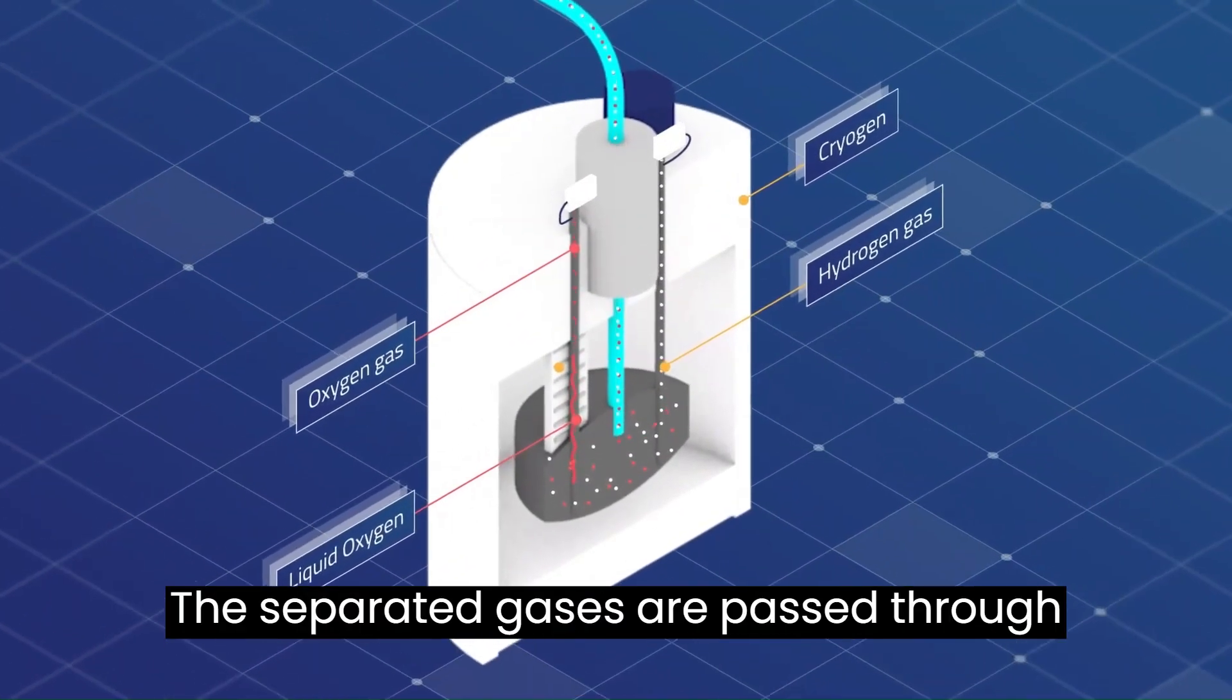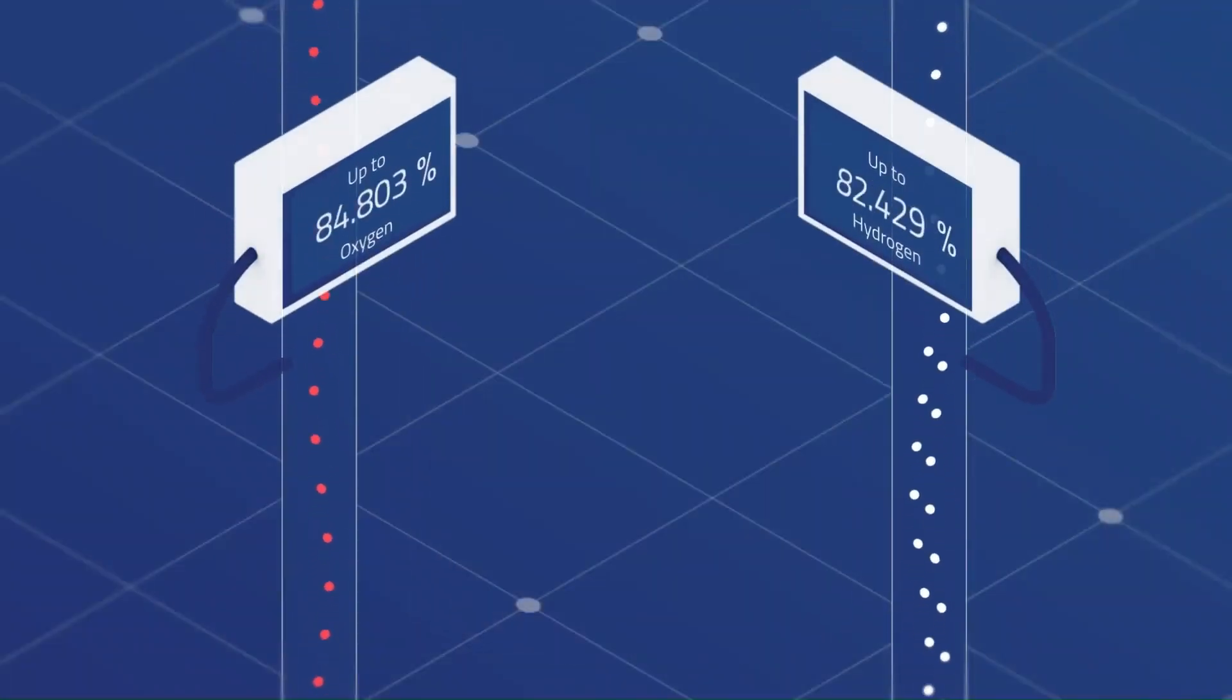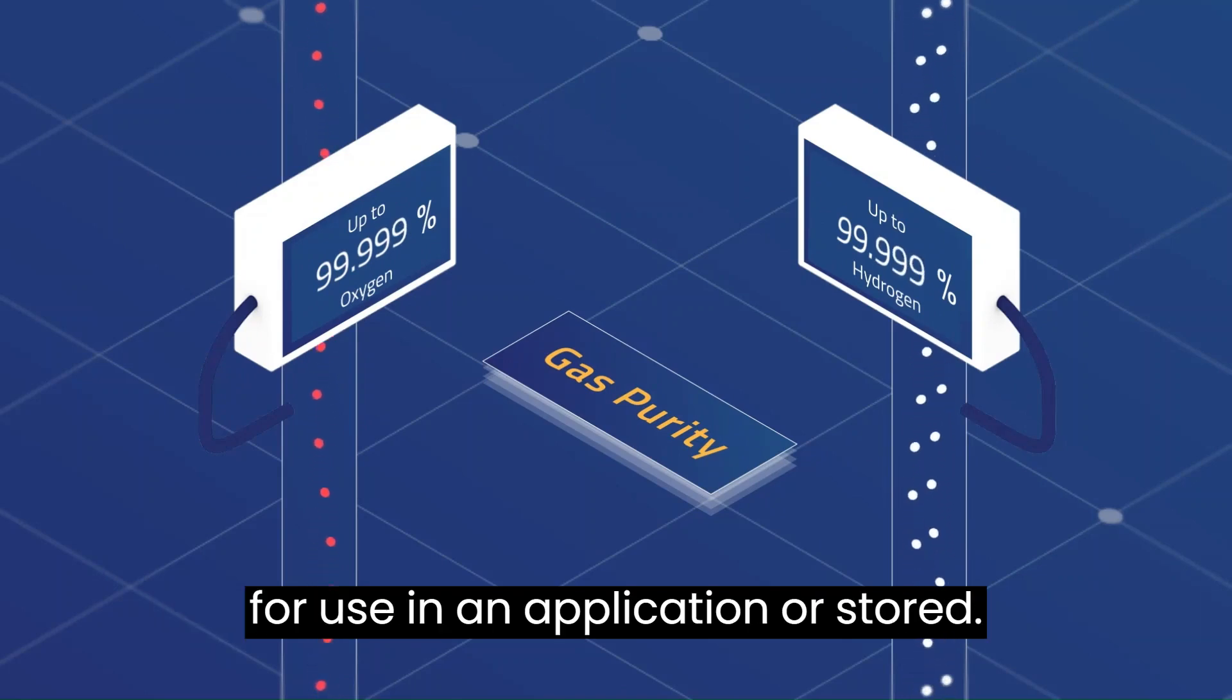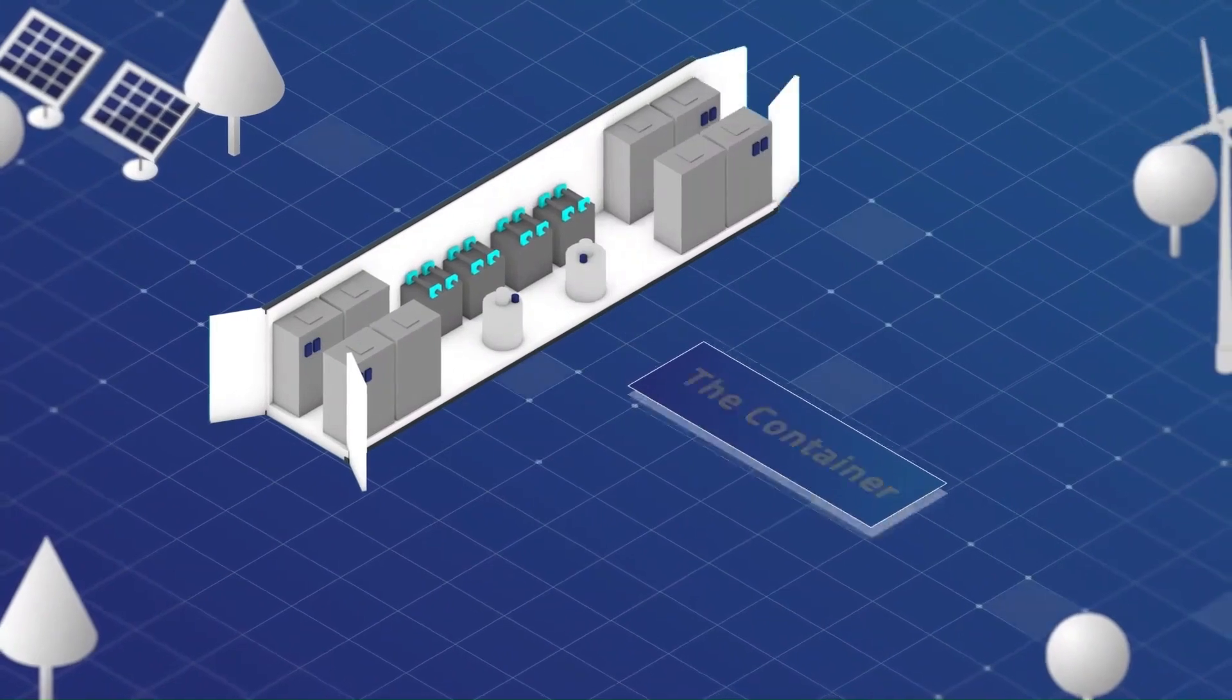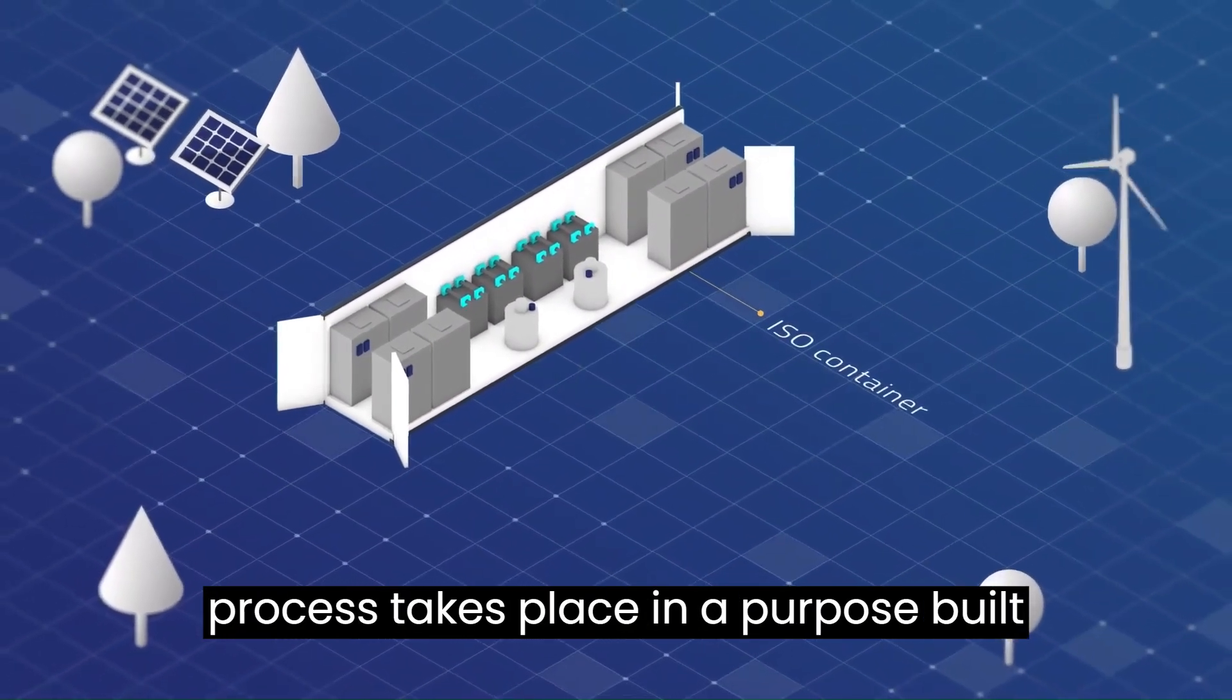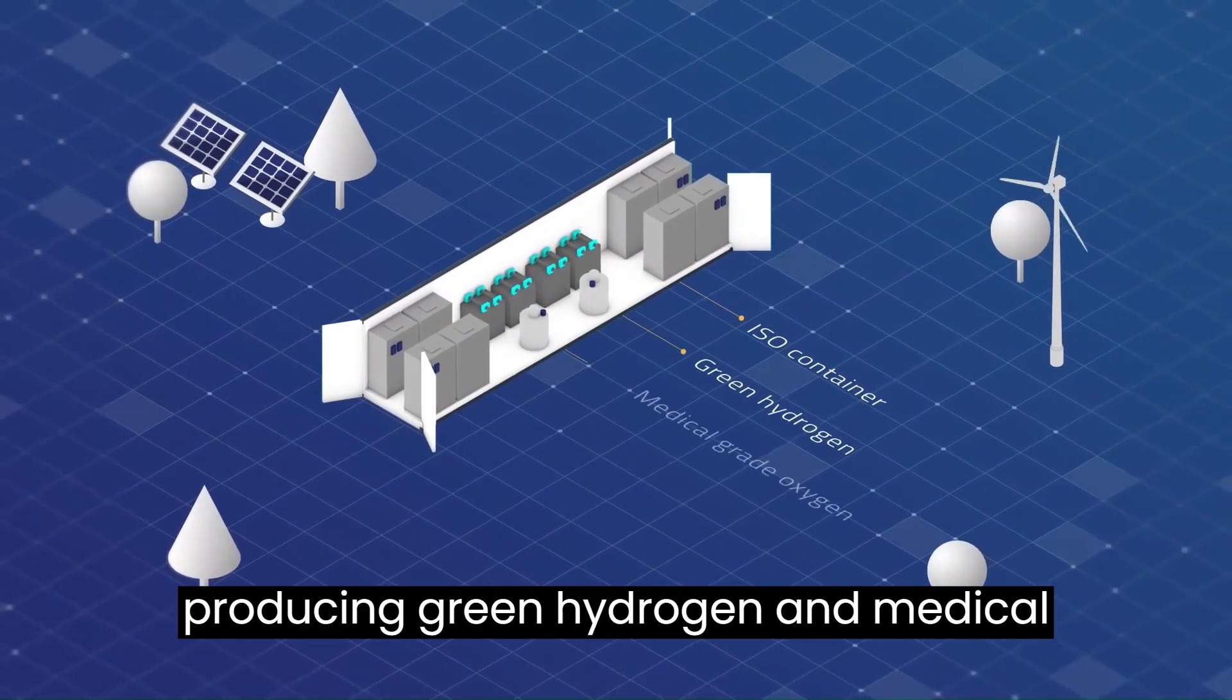The separated gases are passed through the purity meters. The gas purities are measured and passed for use in an application or stored. For small installations, the whole process takes place in a purpose-built container using renewable electricity, producing green hydrogen and medical grade oxygen.